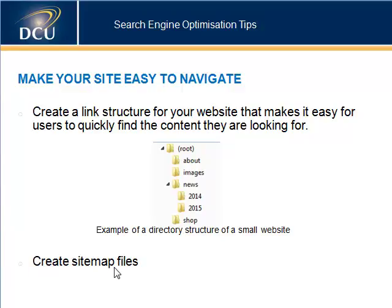Another type is an XML sitemap, which can help search engine spiders or web crawlers find pages on your site. The open source sitemap generator script, which Google helps to create, helps you create an XML sitemap for your site — it's a specific tool that helps you do this.